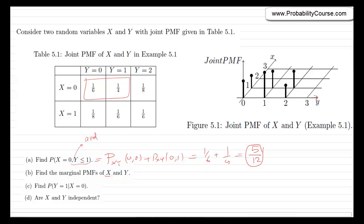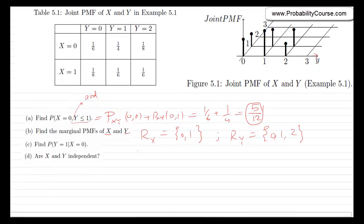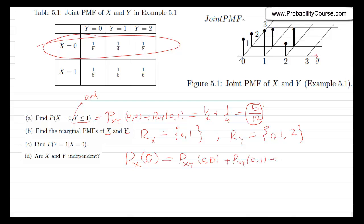For part B, we need to find the marginal PMFs p_x(x) and p_y(y). From the table, x can only take values 0 and 1, and y can only take values 0, 1, and 2. To find p_x(0), we add the three probabilities in the x=0 row: p_xy(0,0) + p_xy(0,1) + p_xy(0,2) = 1/6 + 1/4 + 1/8 = 4/24 + 6/24 + 3/24 = 13/24.